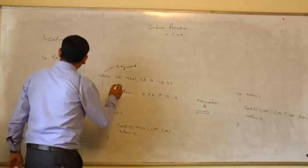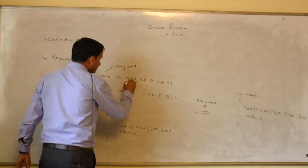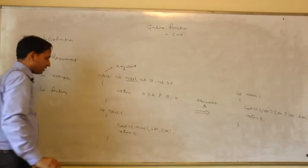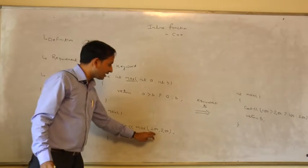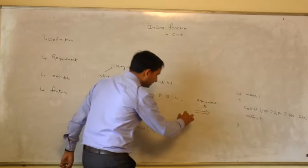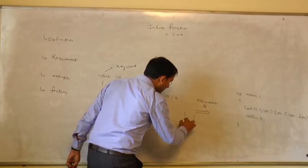Here, this is the example of inline function. Max is our function name and we pass two arguments, 100 and 200. These arguments typically pushed on the stack.